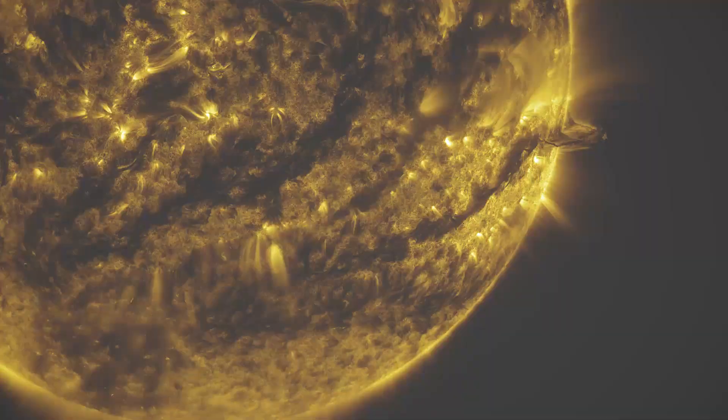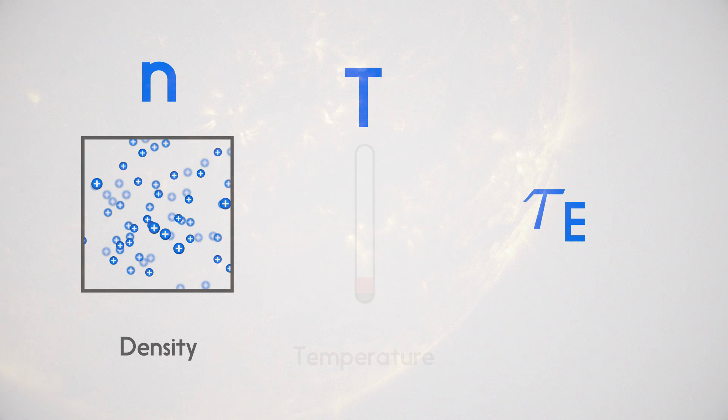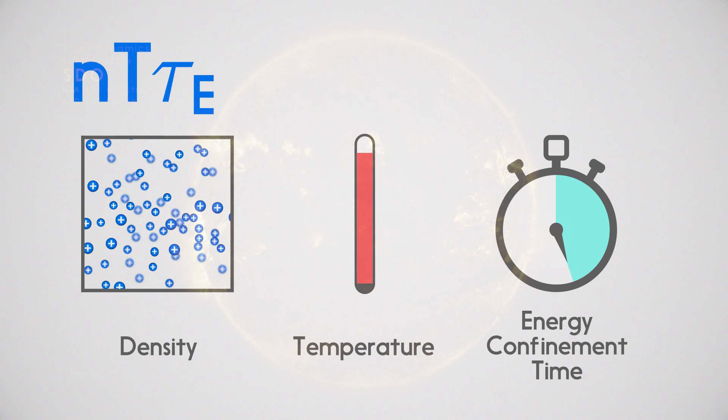This is encapsulated in something called the fusion triple product, NT tau E. Density, temperature and the amount of time the energy is trapped are all multiplied together and this needs to be bigger than a certain number to achieve fusion ignition.